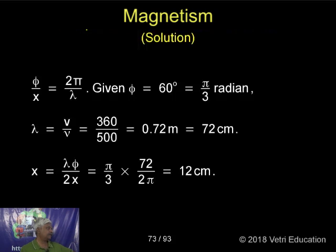2 pi by lambda into x. Given phi is equal to 60, that should be converted into radians. Any problem here, you have to convert it into radians.